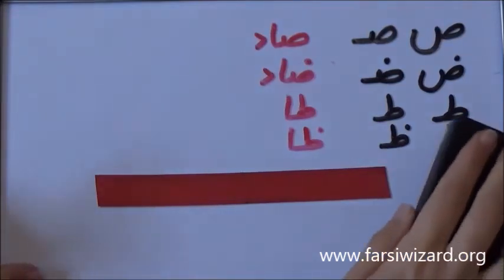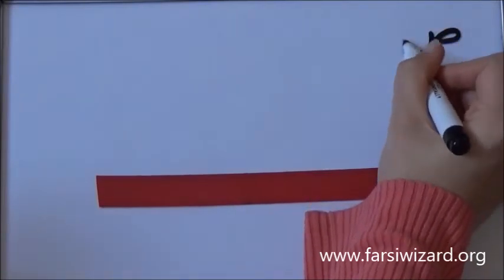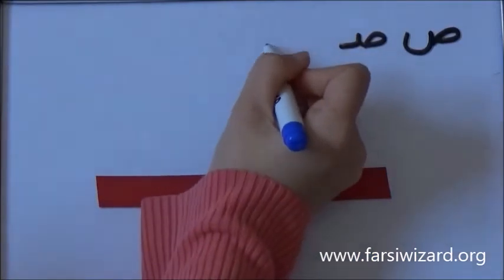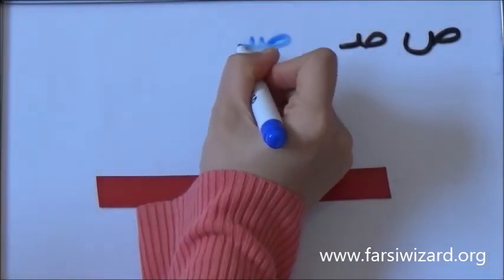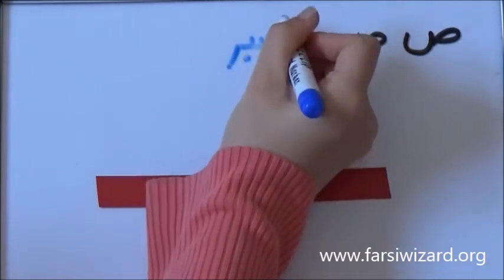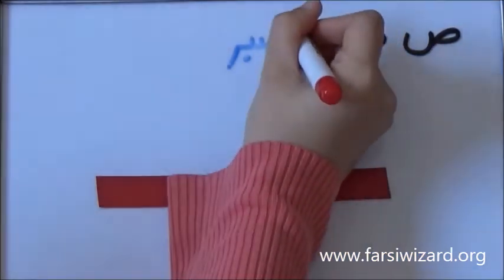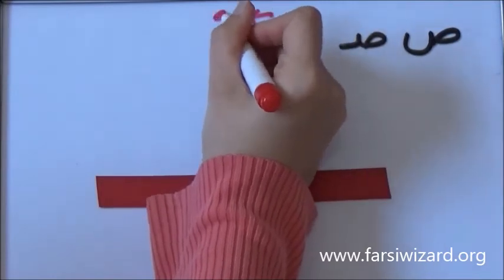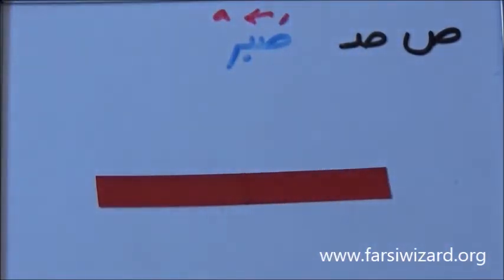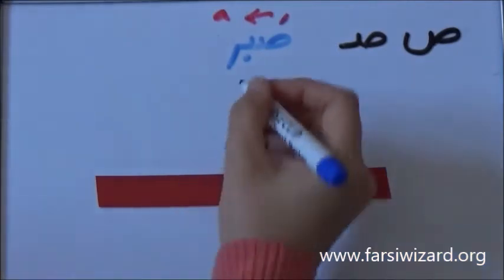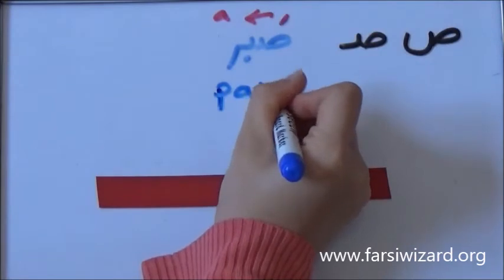Okay, now we're going to practice these letters in words. Here we have Sod, complete version and small version. Remember the letter is Sod, but the sound is S, like any other S in English. Here we have a Persian word, Sabr. You remember the other two letters B and R from the previous videos. And here we have A, the short vowel A on top of Sod, which will make it sound as Sa. Sabr. Now, Sabr is an actual word. It means patience in Farsi.